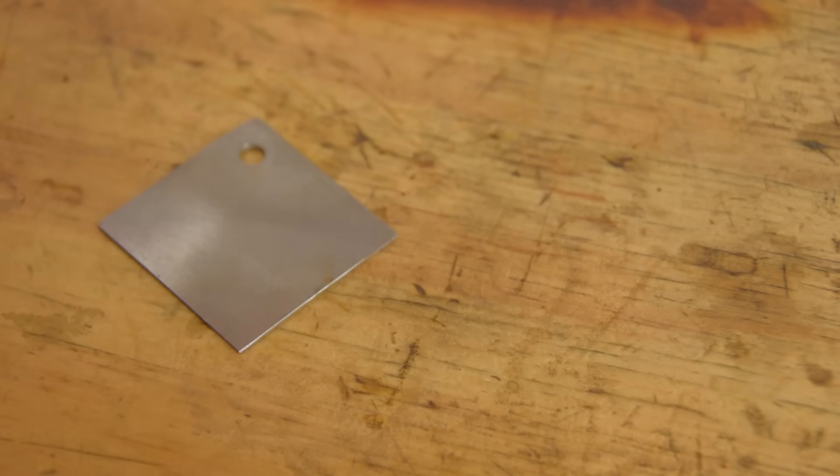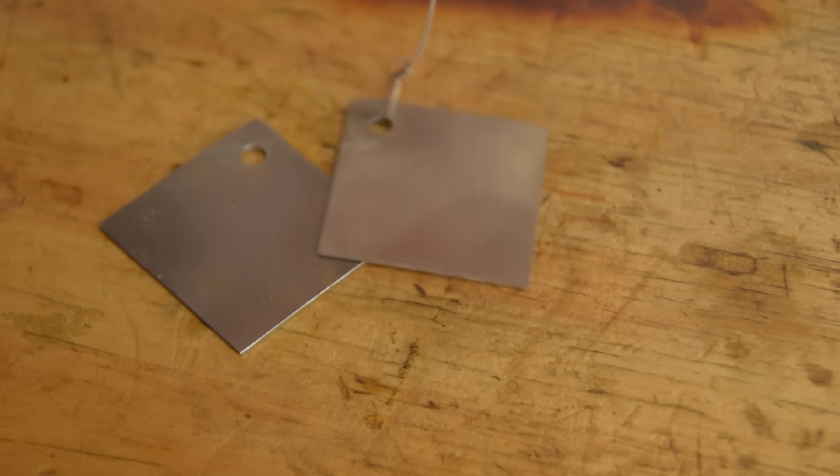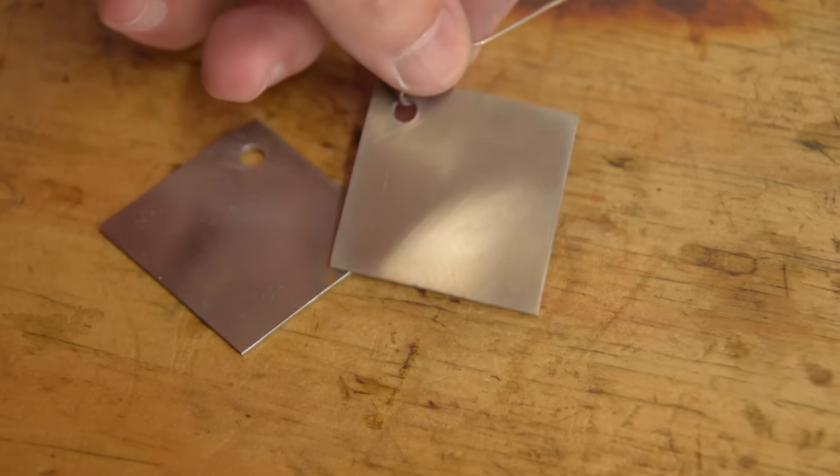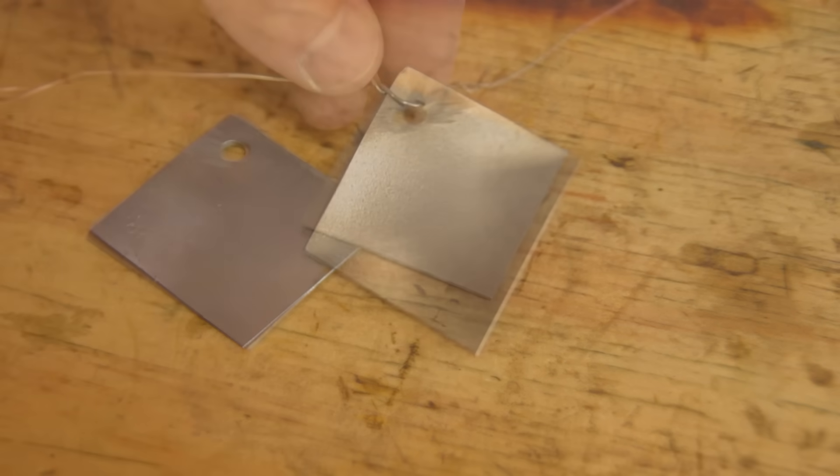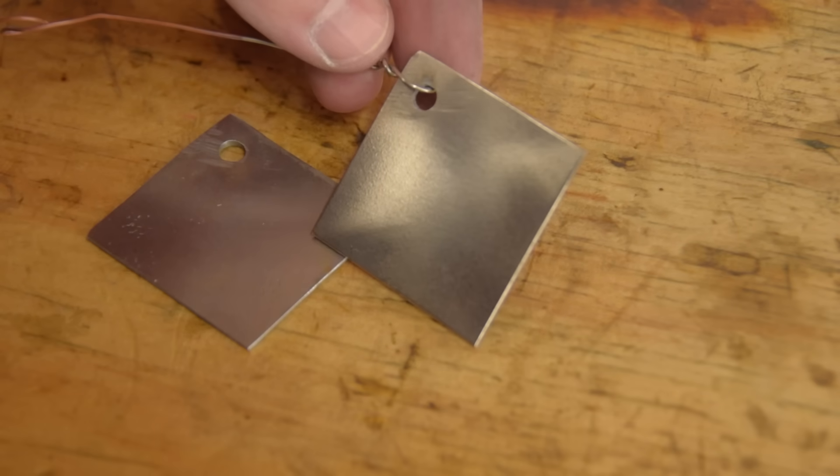The first square is the steel control, unplated. And here's the nickel plated part. Unless you stuff something up, nickel always turns out good. You'll be happy.